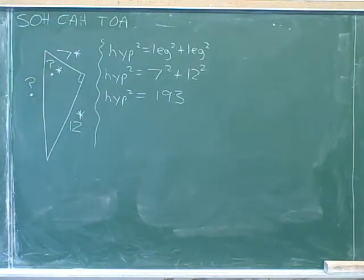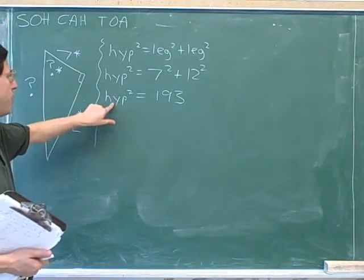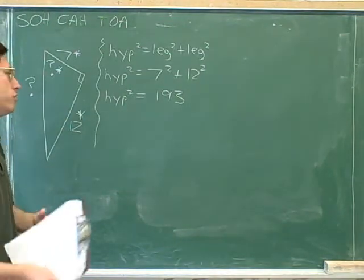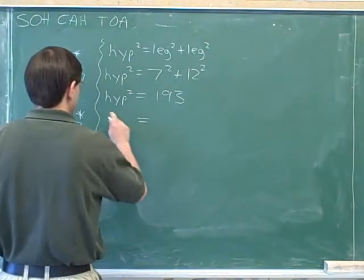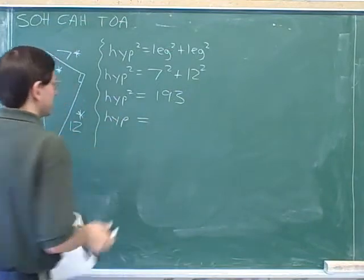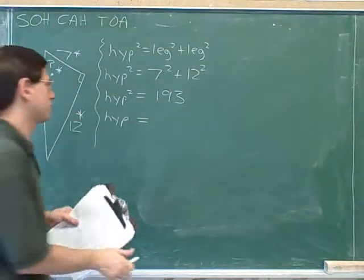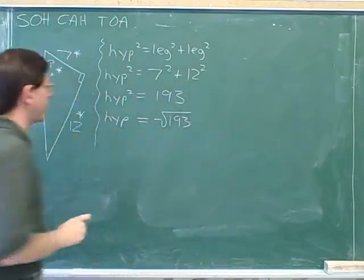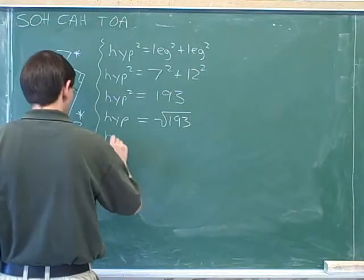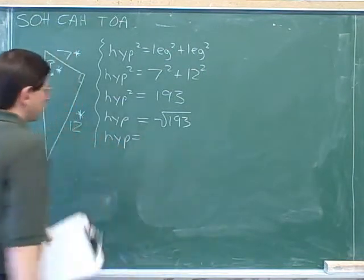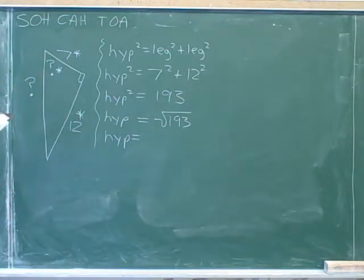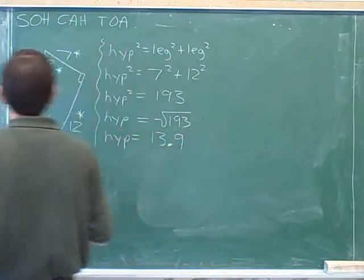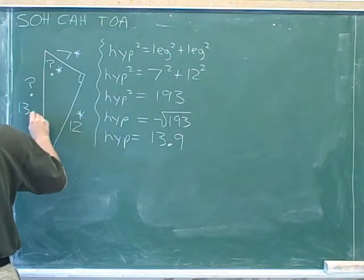Hypotenuse squared equals 193. To get the hypotenuse by itself, we have to remove the squaring function — the opposite of squaring is square rooting. If we take the square root of both sides, the hypotenuse equals the square root of 193. According to the calculator, the square root of 193 is 13.9. Build that into your sketch.